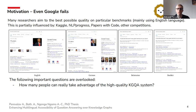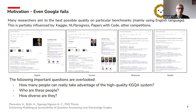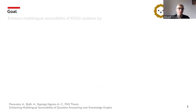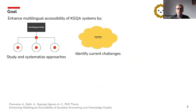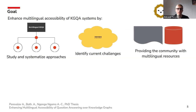Important research questions are overlooked while creating knowledge graph question answering systems. For example: how many people can really take advantage of a high-quality knowledge graph question answering system? Who are these people? How diverse are they? Do they live on one continent or speak one particular language? The goal of my PhD thesis is to enhance multilingual accessibility of question answering systems by studying and systematizing the approaches, identifying current challenges, and providing the community with multilingual resources such as datasets, language models, and systems.